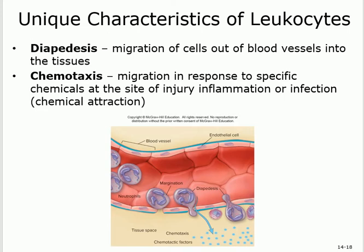Injured cells and some white blood cells release chemicals. These chemicals will attract other cells to the site of inflammation or infection. So when there is inflammation or infection, chemicals are released and attract other cells to that area.